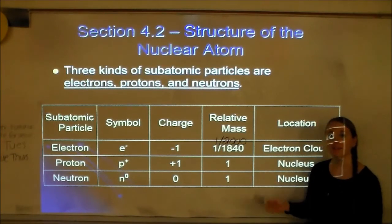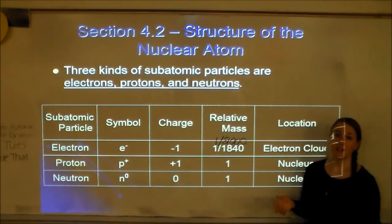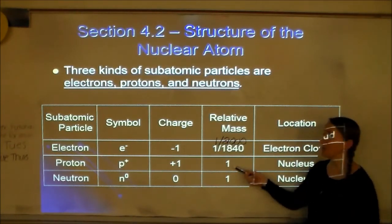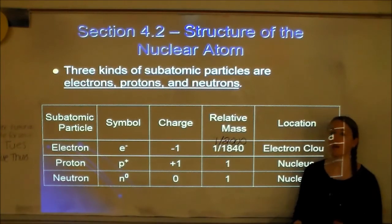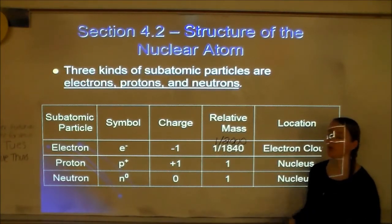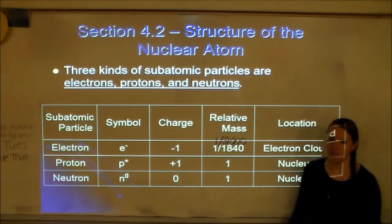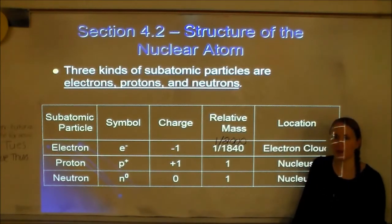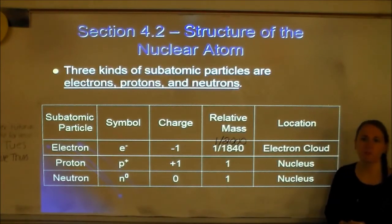Let's talk about relative mass. These are not the actual masses — relative mass means we're just picking a starting point. We say a proton has a mass of one, and a neutron also has a mass of one, so they have pretty much the same mass. An electron, on the other hand, has a mass of 1/1840, or about 1/2000 — meaning it's 2,000 times smaller than a proton or neutron. So would an electron really affect the mass? No.